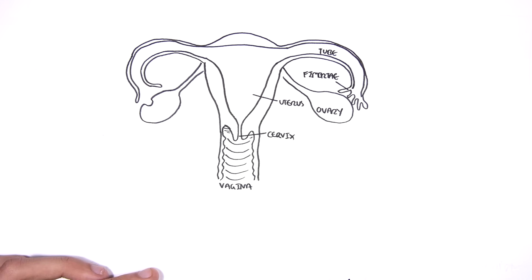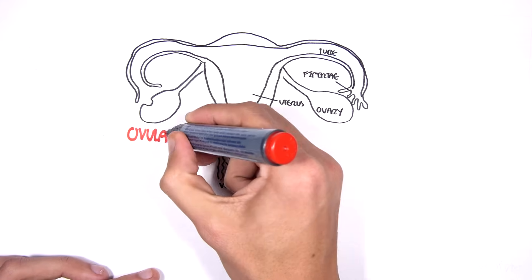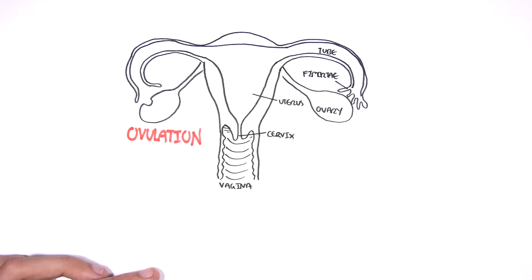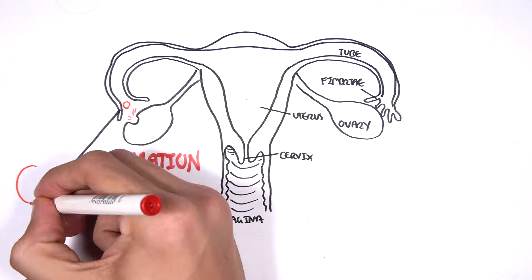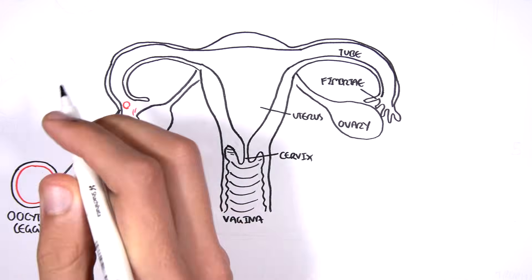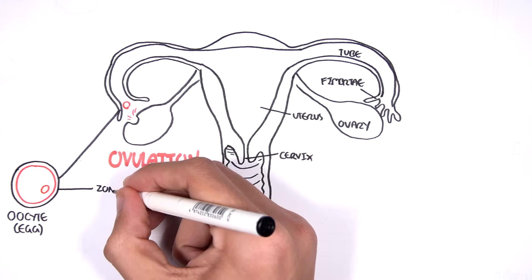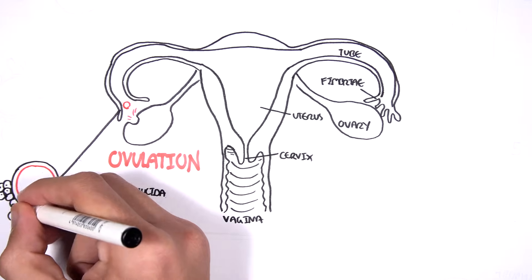Women go through a cycle called the menstrual cycle each month where they ovulate and release an egg called an oocyte. This process is called ovulation. The oocyte is surrounded by a thick protective membrane called the zona pellucida, and surrounding the zona pellucida are cells of the corona radiata.